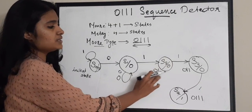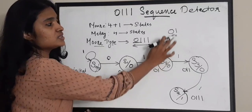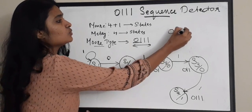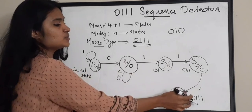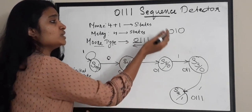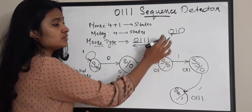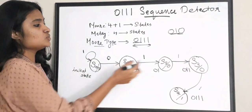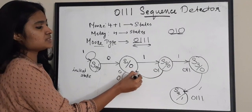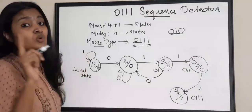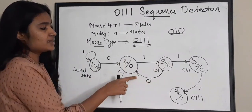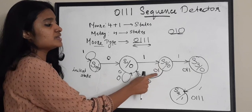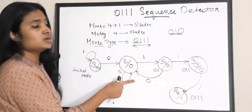In S2 state you have 0 1 in your hand. We have taken receiving a 1. What will happen if you receive a 0? There is no 0 1 0 in the sequence — it is 0 1 1 1. So when you are having 0 1 and again receive a 0, you have to start your sequence detection from 0. You jump back to S1 state, because your sequence has only one 0 and detection starts there.